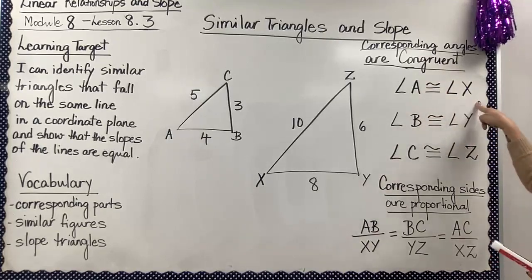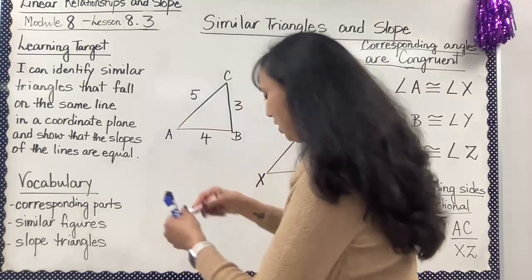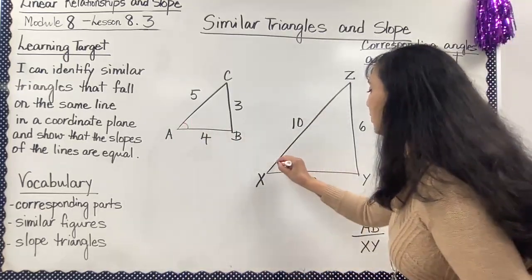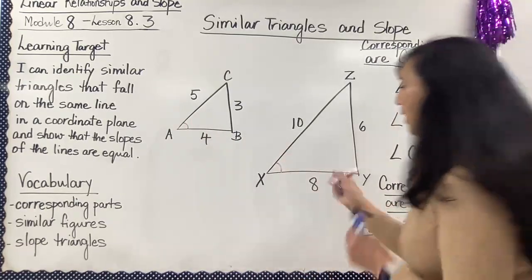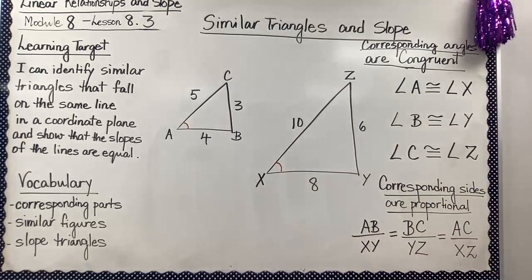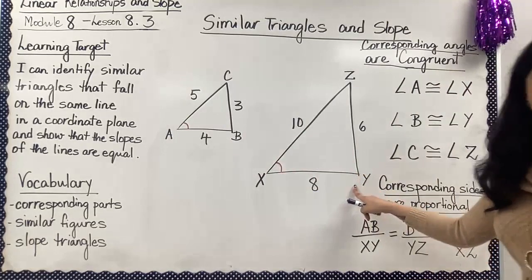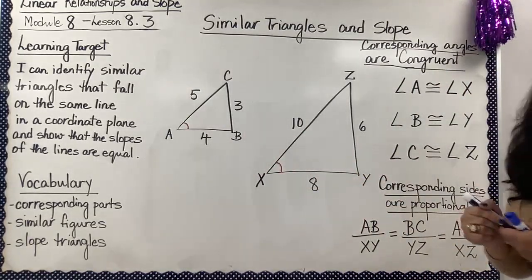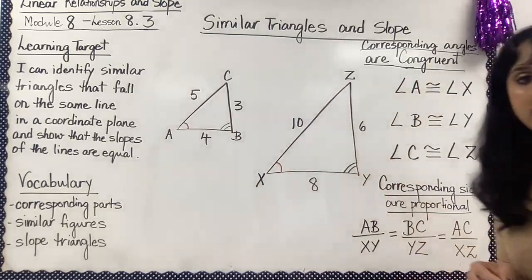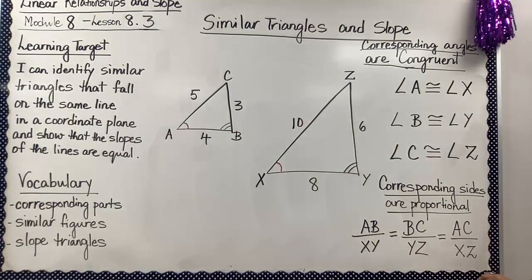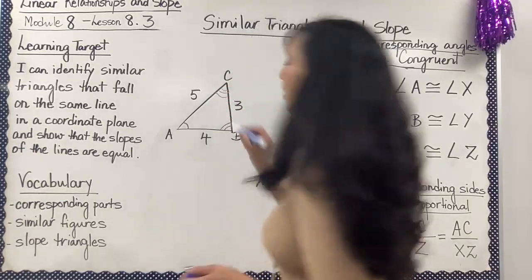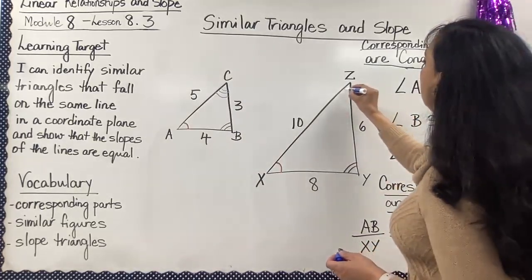Angle A is congruent to angle X — these two have exactly the same angle measure. Then angle B and angle Y are congruent. And angle C is congruent to angle Z.